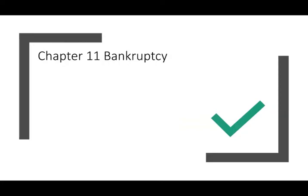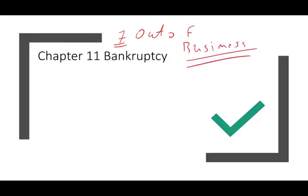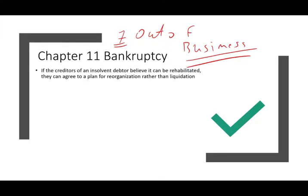Let's go ahead and get started and talk about Chapter 11 bankruptcy. What is Chapter 11? What's the difference between Chapter 11 and Chapter 7? In Chapter 7, the company liquidates — the company goes out of business, they're gone. In Chapter 11, what happens is the creditors believe it's in their best interest to keep the business alive. They don't want to put the business out of business because they believe there's a chance that the business might survive in the long run. Chapter 11 is a reorganization, not a liquidation.